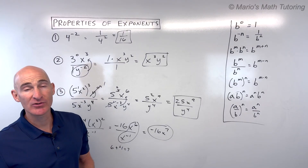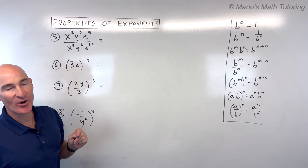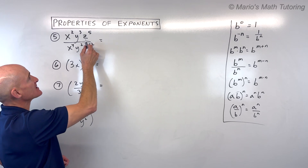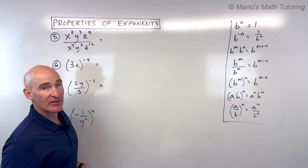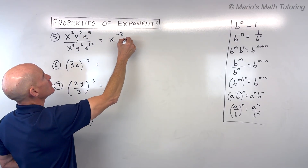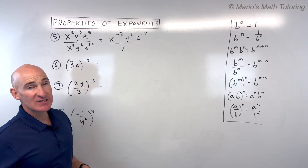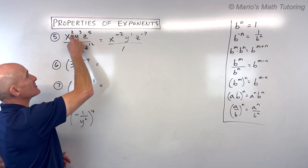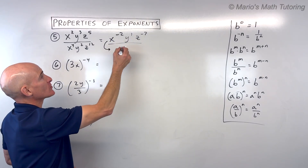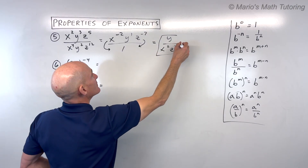For number 5, we have x squared y cubed z to the 5th all over x to the 4th, y squared, z to the 12th. Think of it as three separate quotients. Using the quotient property, subtract exponents: 2 minus 4 is negative 2, 3 minus 2 is 1, and 5 minus 12 is negative 7. The answer always goes in the numerator first, but since we have negative exponents for x and z, we move those to the other side of the fraction and make them positive, giving y over x squared z to the 7th.